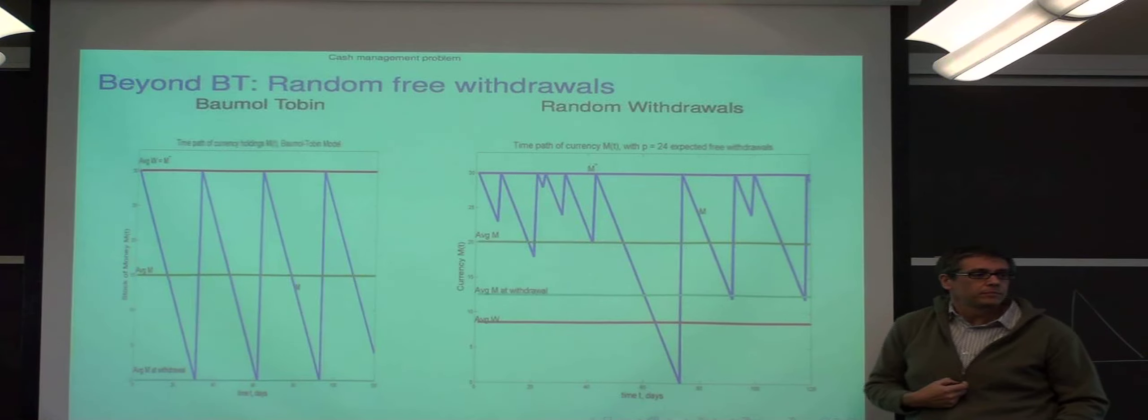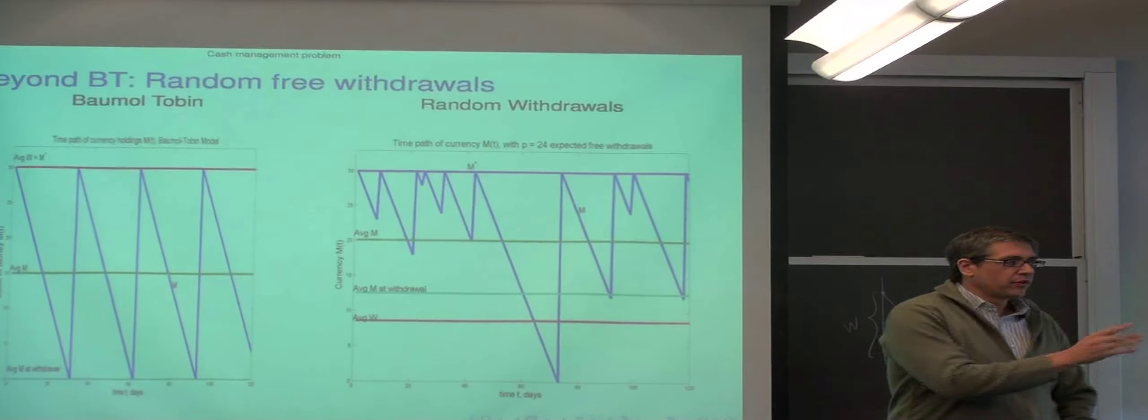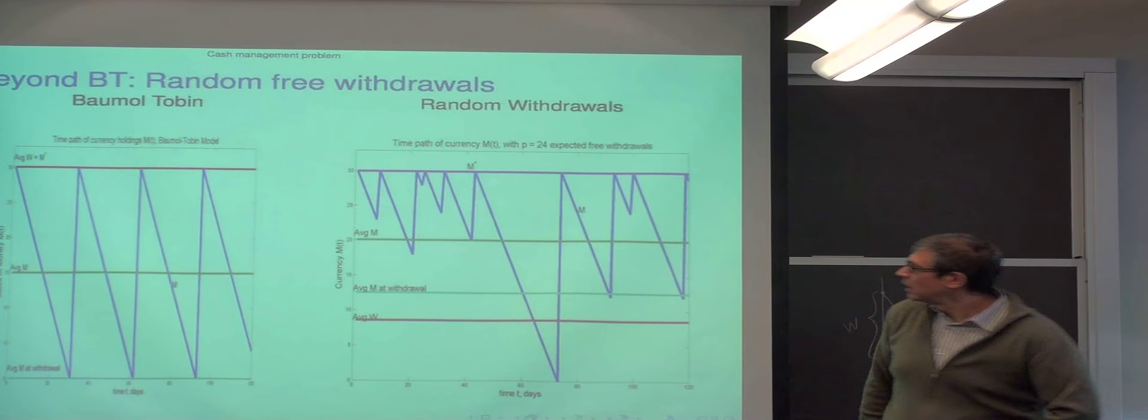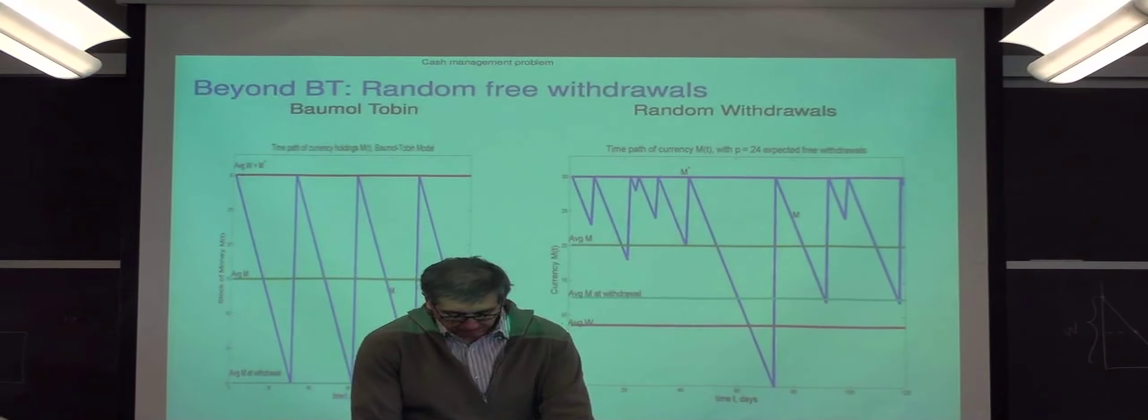So that would be the way the model would look like. What about the volatility of the concept or the change? The volatility of P. I want to think of this as the cross section, so P is going to be constant. The only randomness here would be P.